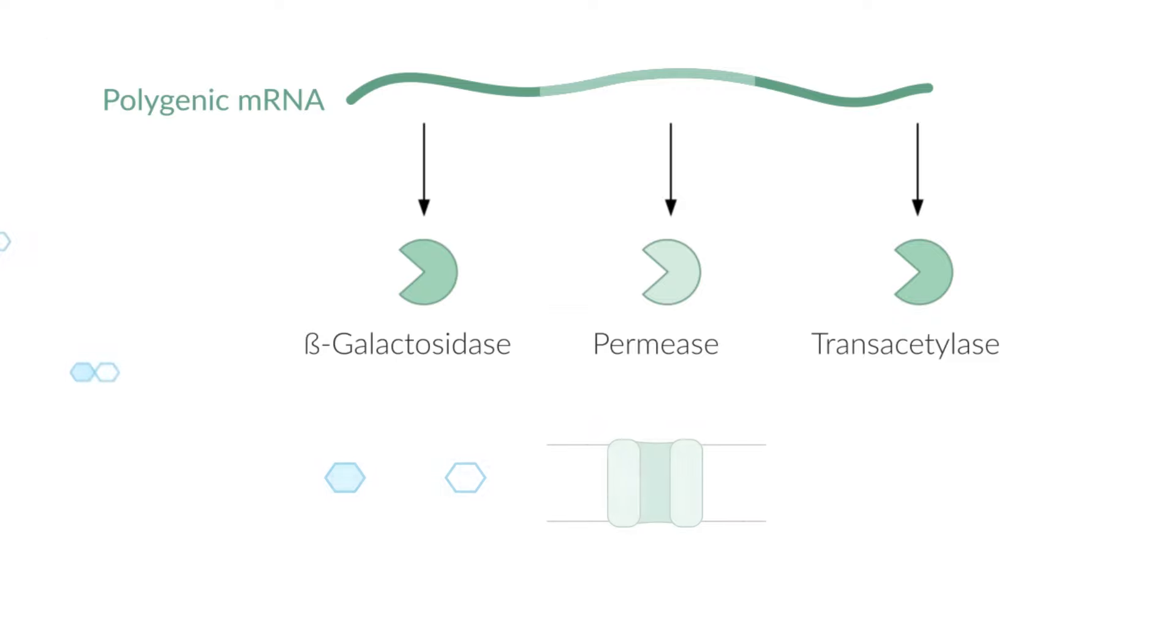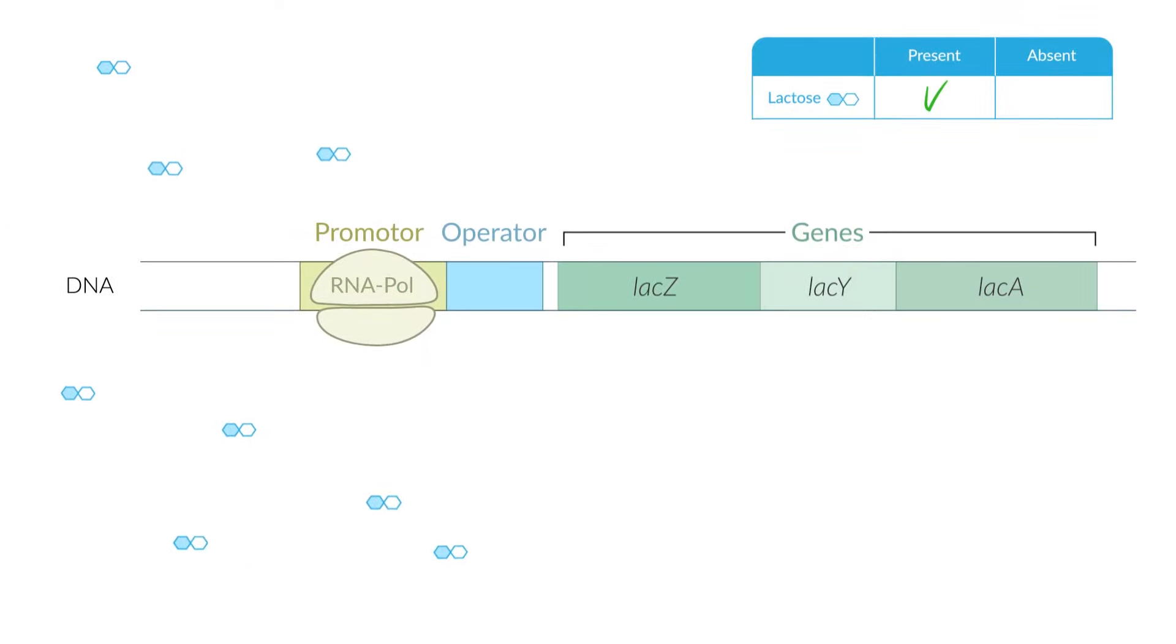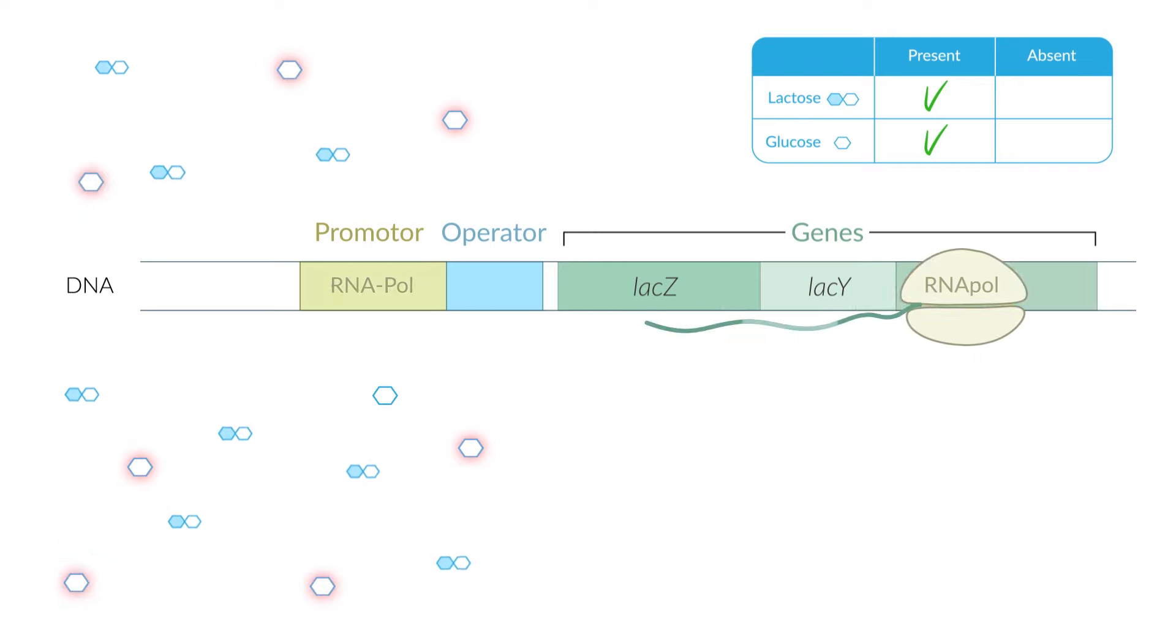An additional special mechanism is used in the presence of lactose and absence of glucose. Glucose is usually the preferred energy source for E. coli. In the presence of glucose, lactose degradation is possible but not essential for survival and proceeds as just described.